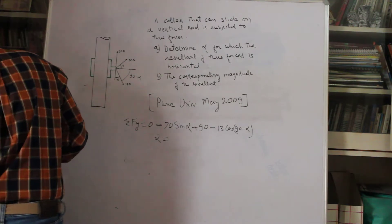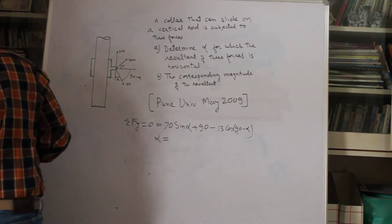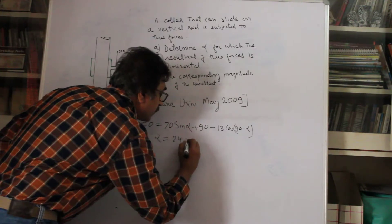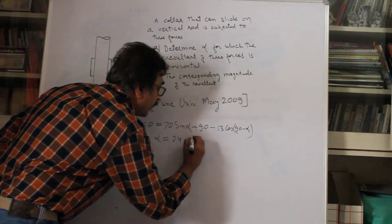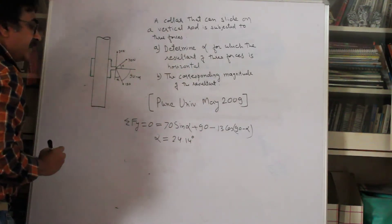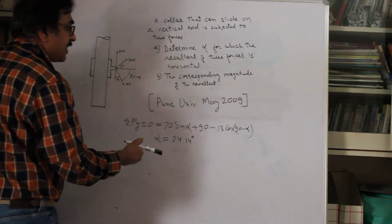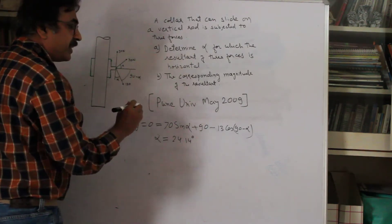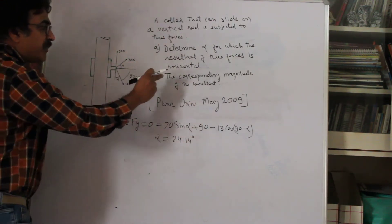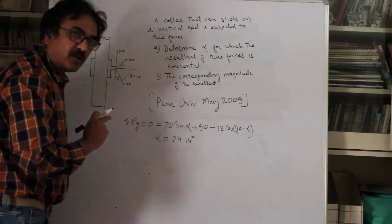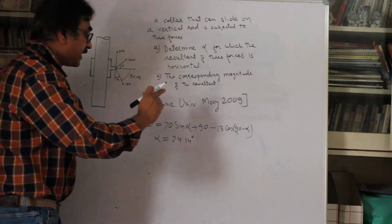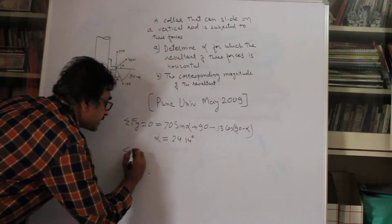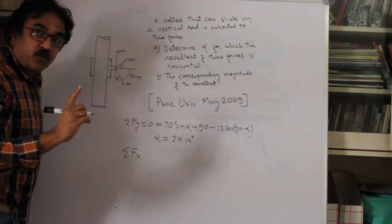Solving this equation gives the angle alpha = 24.14 degrees. That is the first answer. Once alpha is found, we want to find the magnitude of the resultant, which acts in the horizontal direction — meaning we need sigma Fx. Note that sigma Fx is not zero; it has a value because the resultant is horizontal.